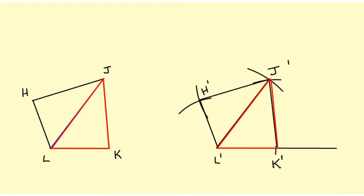You can see that I have copied triangle L J K and I have copied triangle H J L, and the two triangles together give me a copy of quadrilateral H L K J.